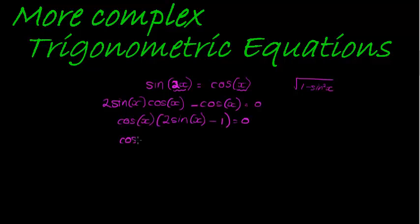So then I have cos x is equal to 0 or 2 sine x minus 1 is equal to 0 and this gives me sine x equal to a half or cos x equal to 0 and this is two trig ratios equal to a constant. And I've definitely gotten to that point.